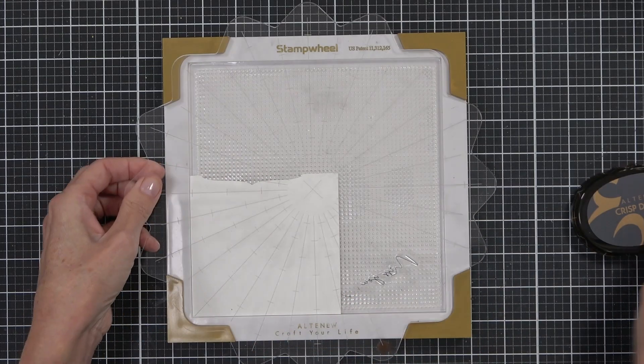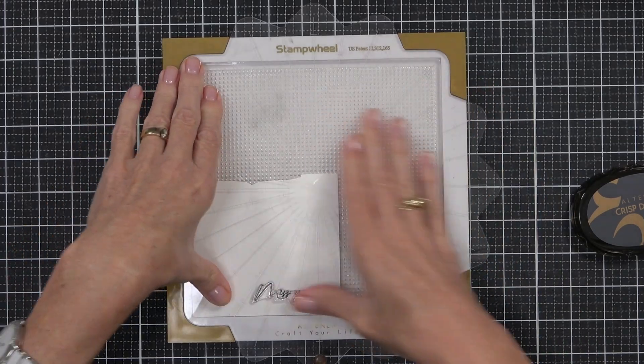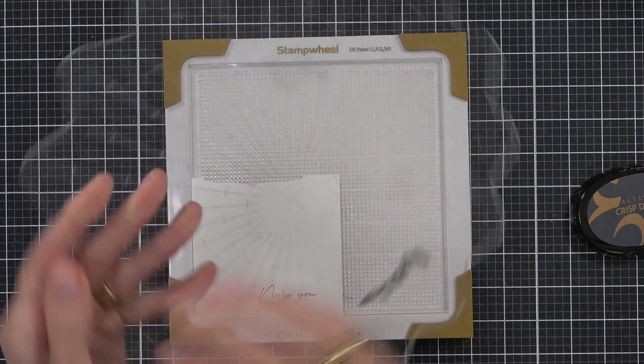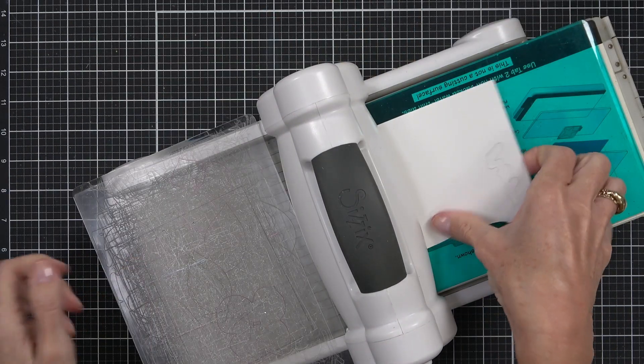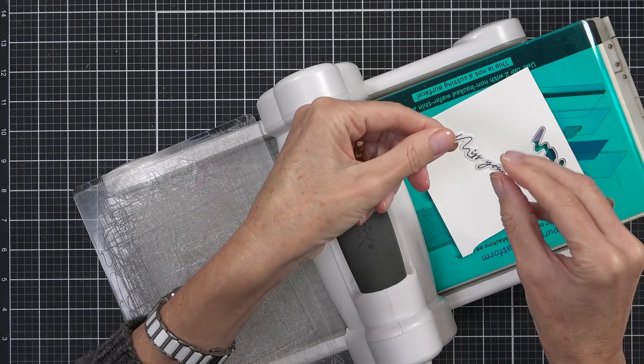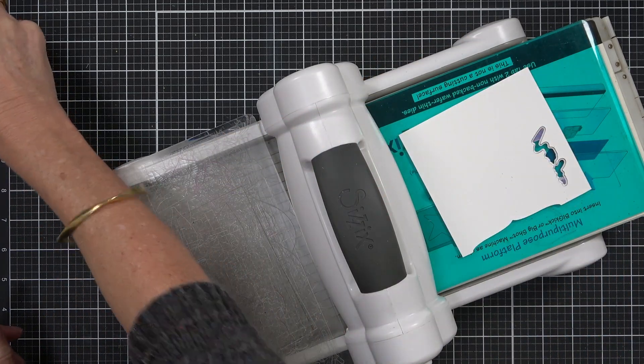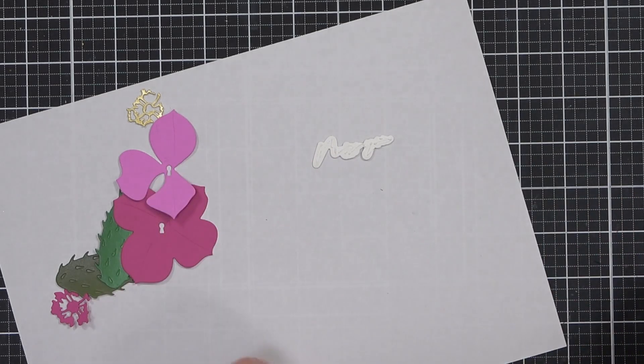Now to decorate my card of course I need a sentiment and I've got the Elegant Sayings stamp here. I'm using some Dark Night ink which is a really dark blue ink, it's really pretty, and I can just cut that out with the coordinating die. I like to die cut the die a couple of times so I can layer it up and give it a little bit of strength because I do want to pop this sentiment up on the front of the card.